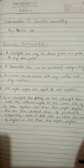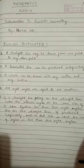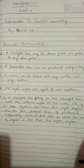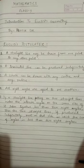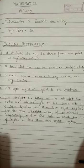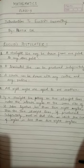The third postulate is: a circle can be drawn from any center and any radius. We can draw a circle from any center and of any radius using a protractor, and we can easily draw a circle.